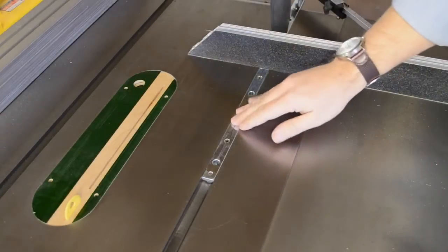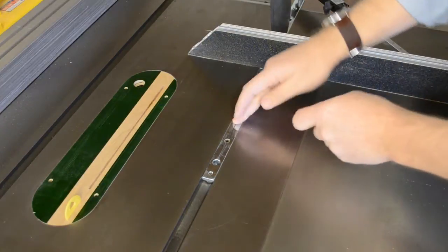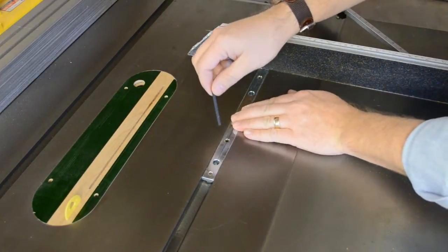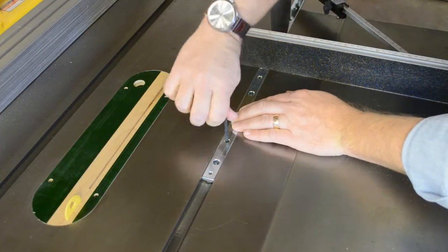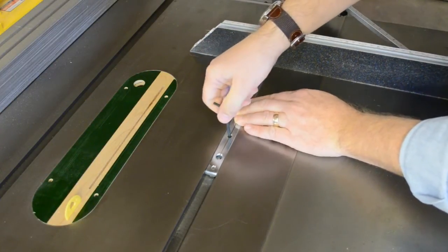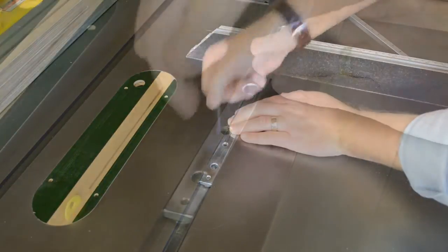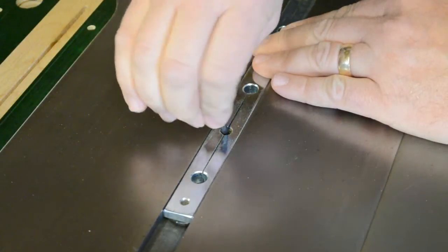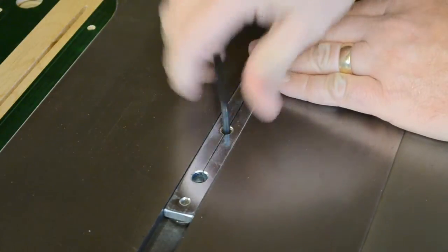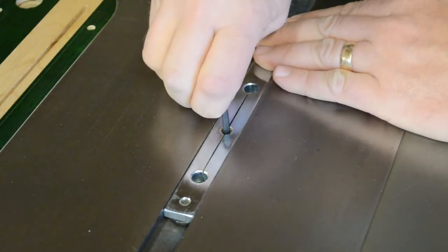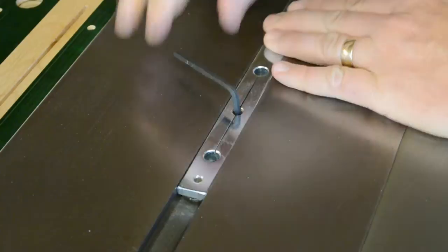There are three adjustment slots in the guide bar to ensure that it exactly fits the miter slot of your saw. To adjust, insert the hex key into the set screw at the center of the slot. Adjusting the screw up or down will expand and contract the width of the bar. Adjust each slot until you eliminate lateral play but still have smooth sliding action all along the miter slot.